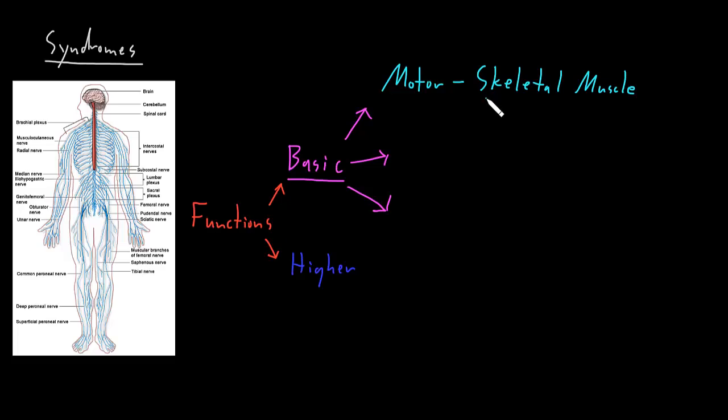the motor functions of the nervous system cause movement, tone, and posture, which are the end results of contraction of skeletal muscle. The next big category of basic functions of the nervous system I like to call sensory functions.